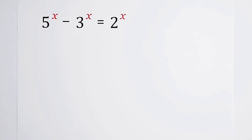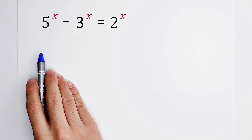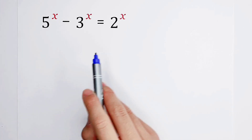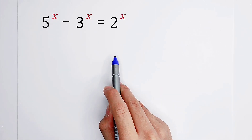Welcome to Math Winnow! Are you able to solve this equation? 5 to the power of x minus 3 to the power of x equals 2 to the power of x.